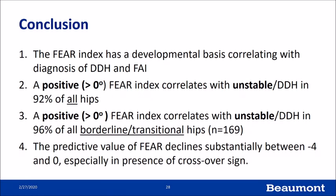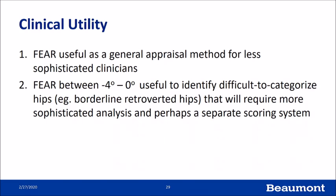In conclusion, the FEAR index has a developmental basis and correlates strongly with DDH and FAI. A positive FEAR index correlates quite strongly with instability, especially in the borderline transitional age group. However, if there is femoral retroversion, the measurement is not reliable, and predictive value falls in the range between minus four and zero degrees. Clinically, the FEAR index is most useful as a general appraisal method for providers less experienced in analyzing plain radiographs, and a FEAR index between minus four and zero degrees should stimulate more careful, sophisticated analysis of these hips.